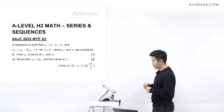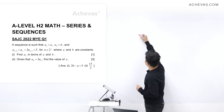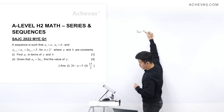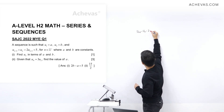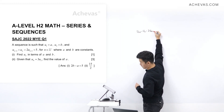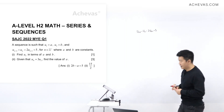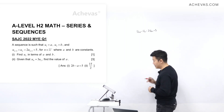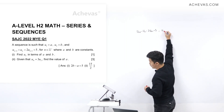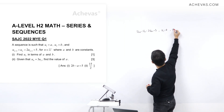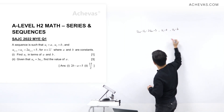In this question, we are given that u(n+2) + u(n) is equal to 2u(n+1) + 5, where n are positive integers. We are also given that u1 is equal to a, and u2 is equal to b.